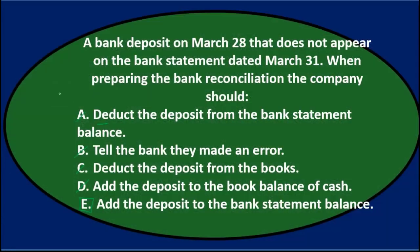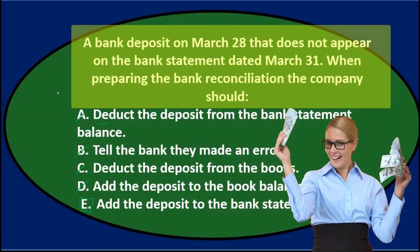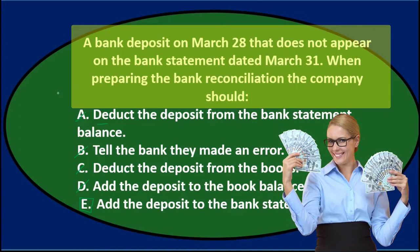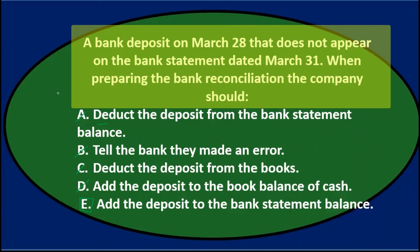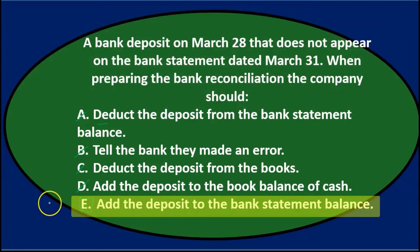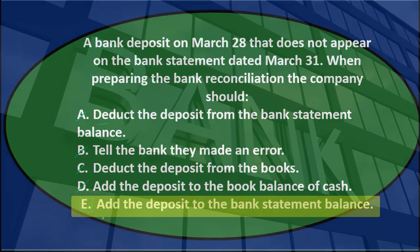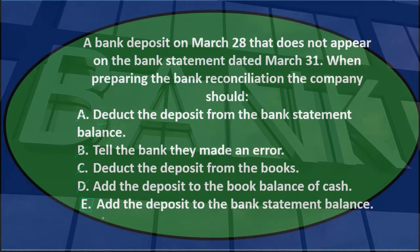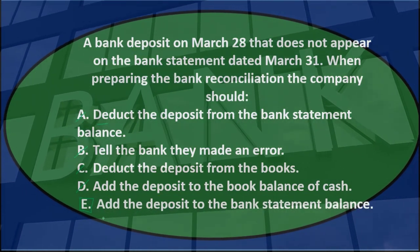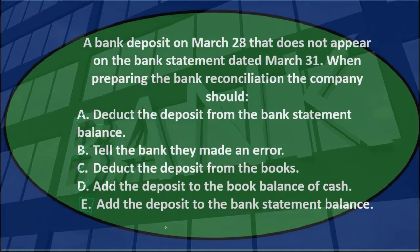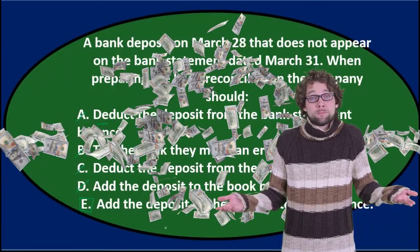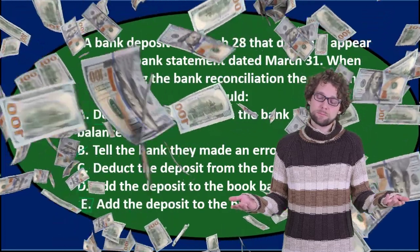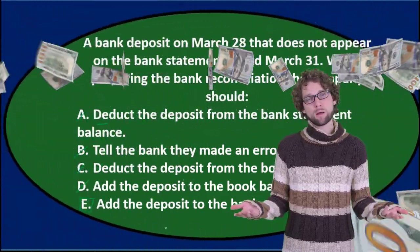The correct answer is E. A bank deposit on March 28th that does not appear on the bank statement dated March 31st — when preparing the bank reconciliation the company should E) add the deposit to the bank statement balance. The bank statement balance will be too low compared to our balance by this deposit, which we correctly recorded on our side but which the bank has not yet received. To reconcile, we increase the bank balance by the deposit.